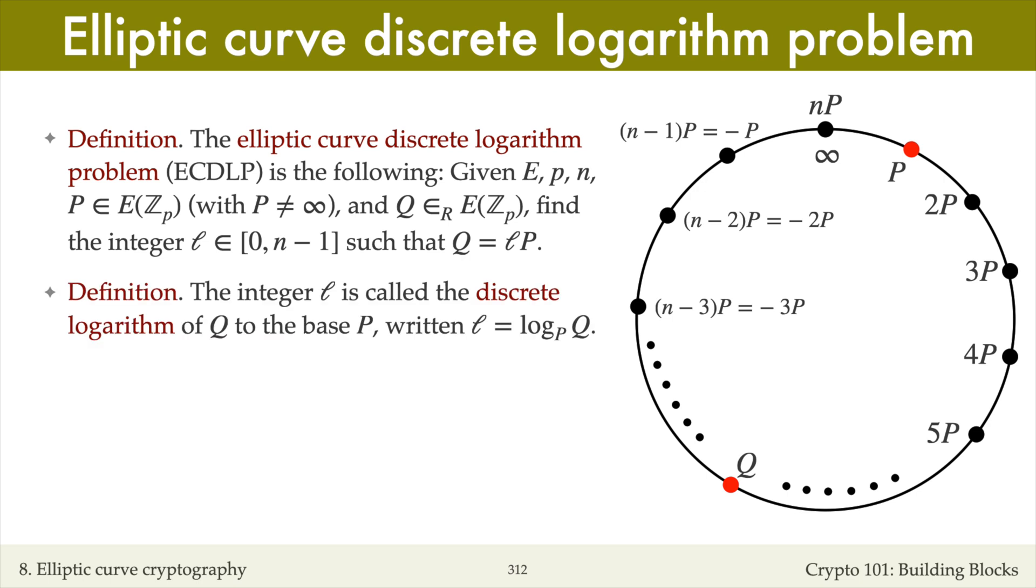The integer l is called the discrete logarithm of Q to the base P, and written l equals log base P of Q.